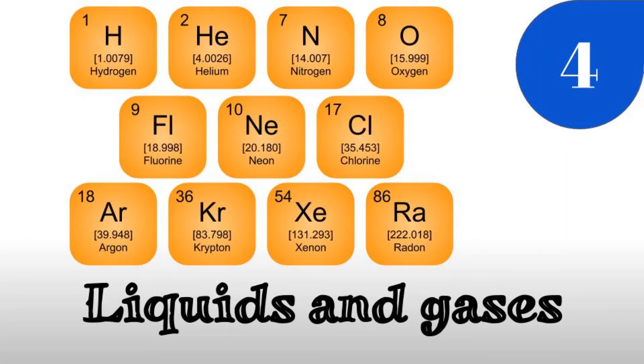There are 11 gases that can be found on the periodic table. These are hydrogen, helium, nitrogen, oxygen, fluorine, neon, chlorine, argon, krypton, xenon, and radon. The other 105 elements found on the periodic table are all solids.